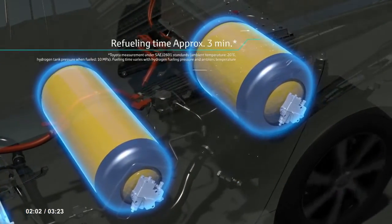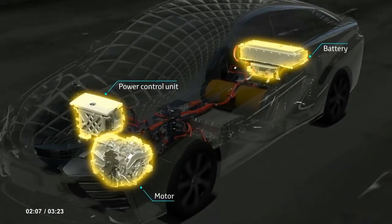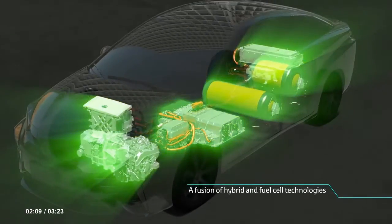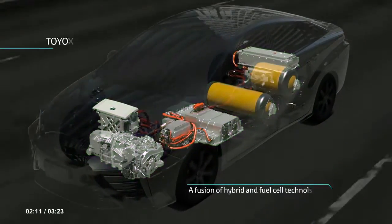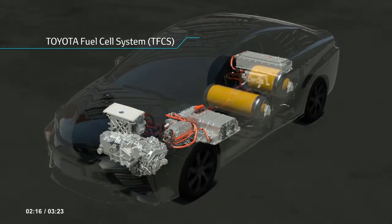Leveraging Toyota's hybrid vehicle technology, the power control unit manages the fuel cell output power and battery power with detailed precision. This innovative FC unit and HV technology combination makes the Toyota fuel cell system.